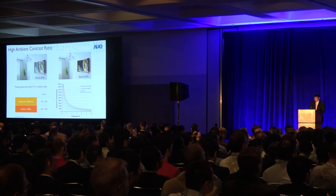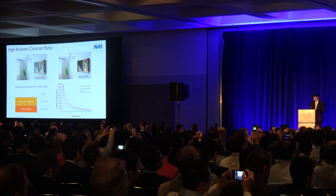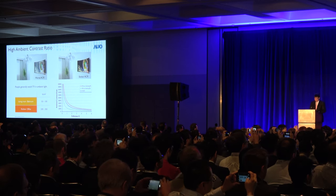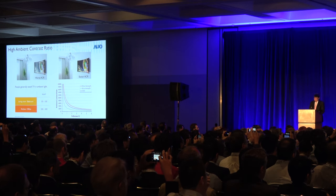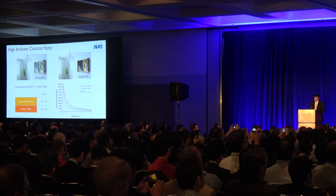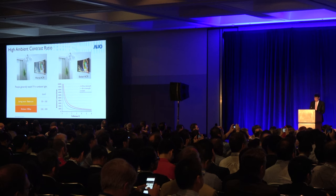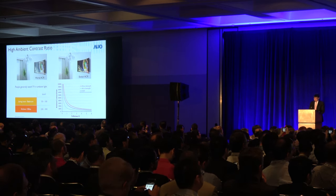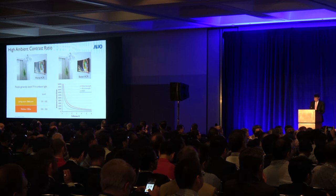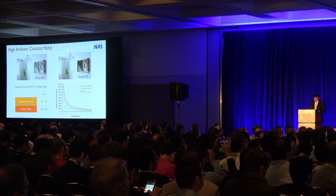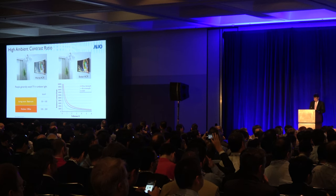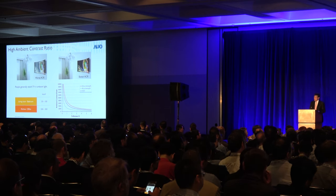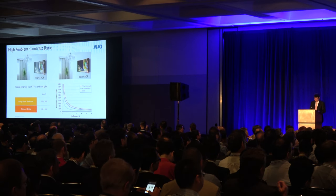In general, people do not watch displays in total darkness unless they are in the cinema. When audiences watch displays in an ambient environment, the reflection of light on screens will reduce image quality. High contrast ratio is a key feature of PSA LCD technology. Compared with IPS LCD or OLED, PSA LCD is able to provide superior image quality under ambient environment.